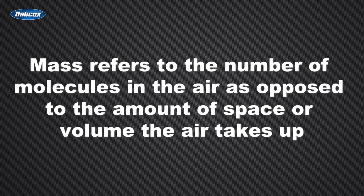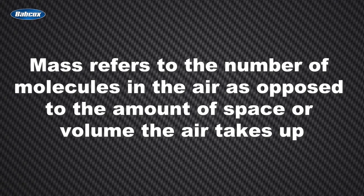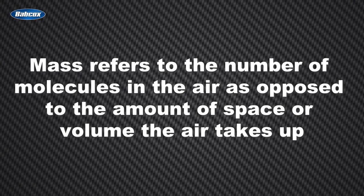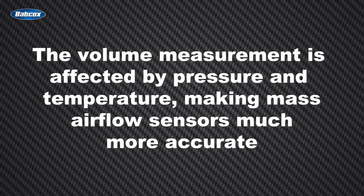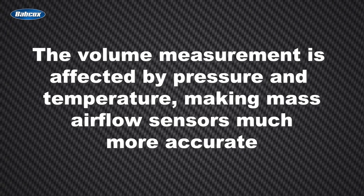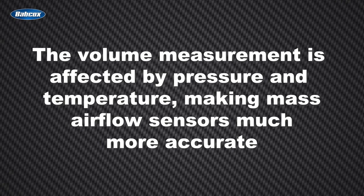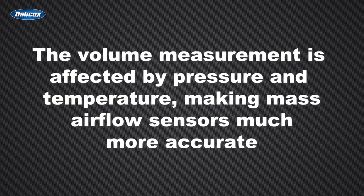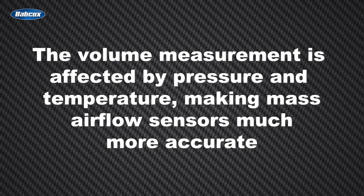Mass and volume are scientifically different principles. Mass refers to the number of molecules in the air, as opposed to the amount of space or volume the air takes up. The volume measurement is affected by pressure and temperature, making mass air flow sensors much more accurate because they don't need to compensate for pressure and temperature fluctuation.